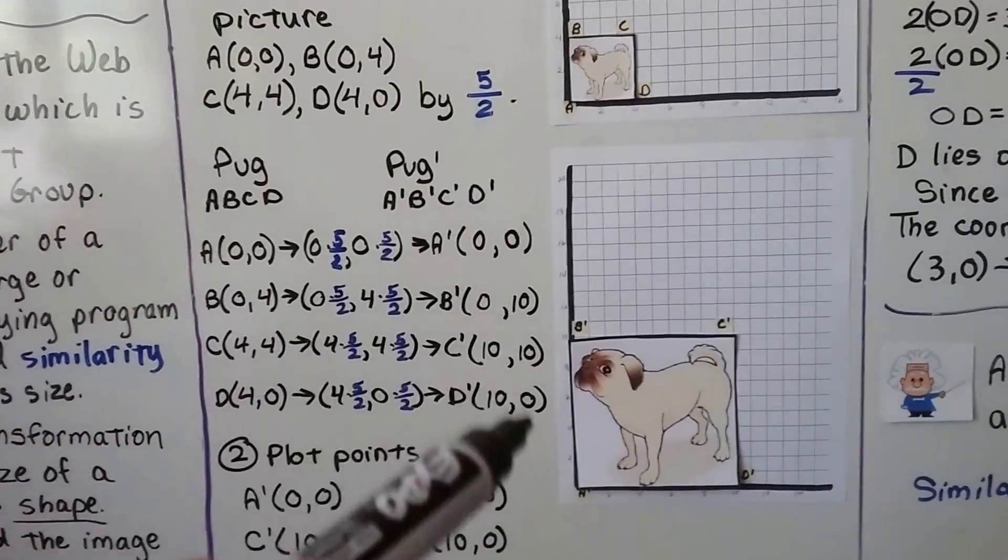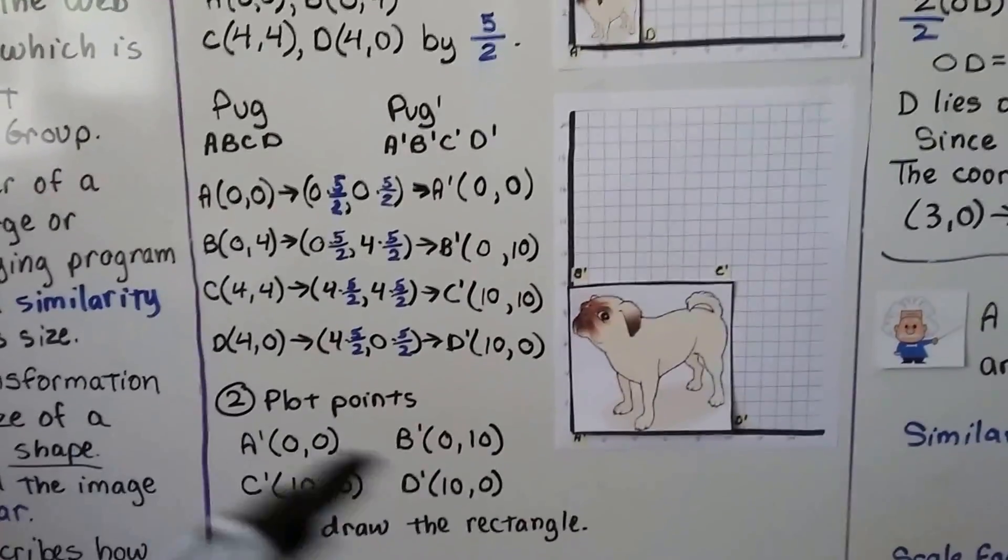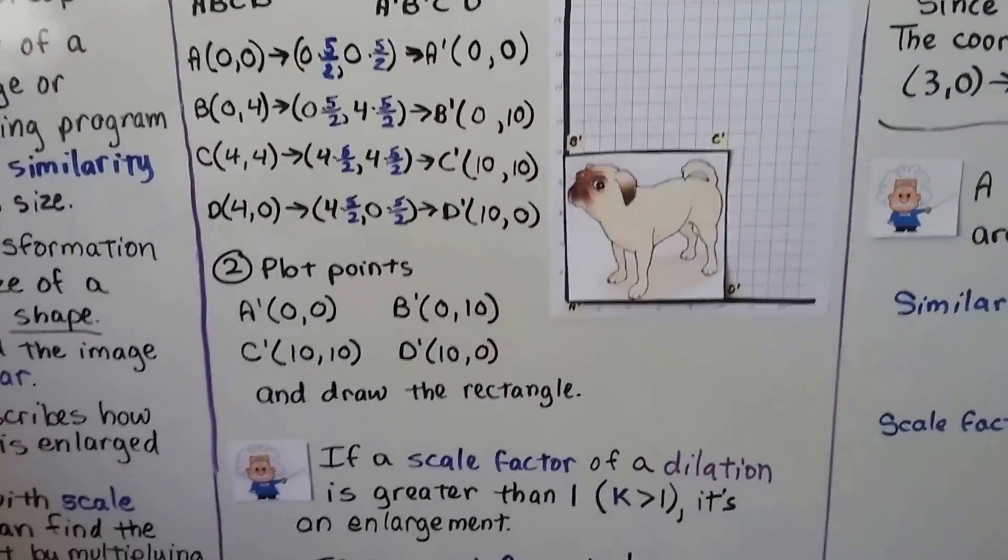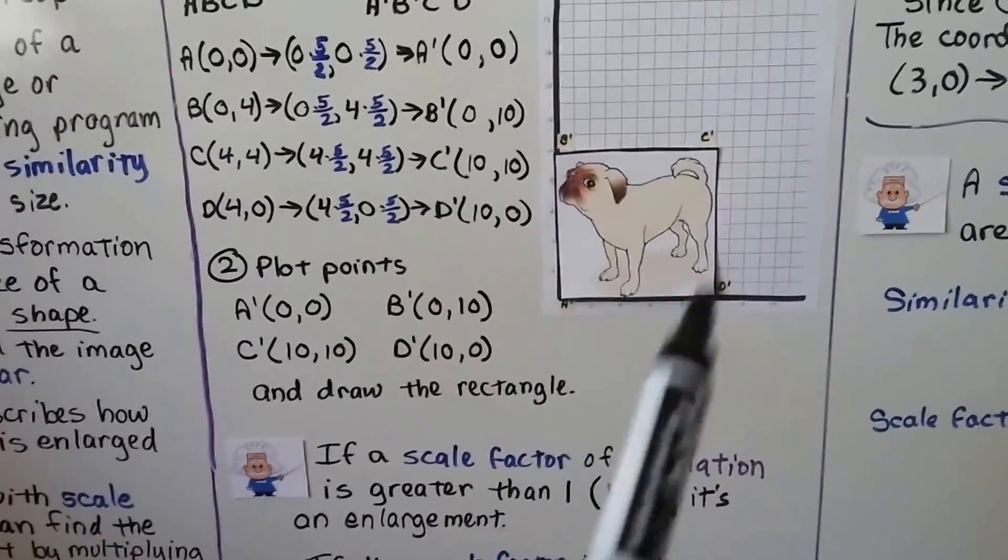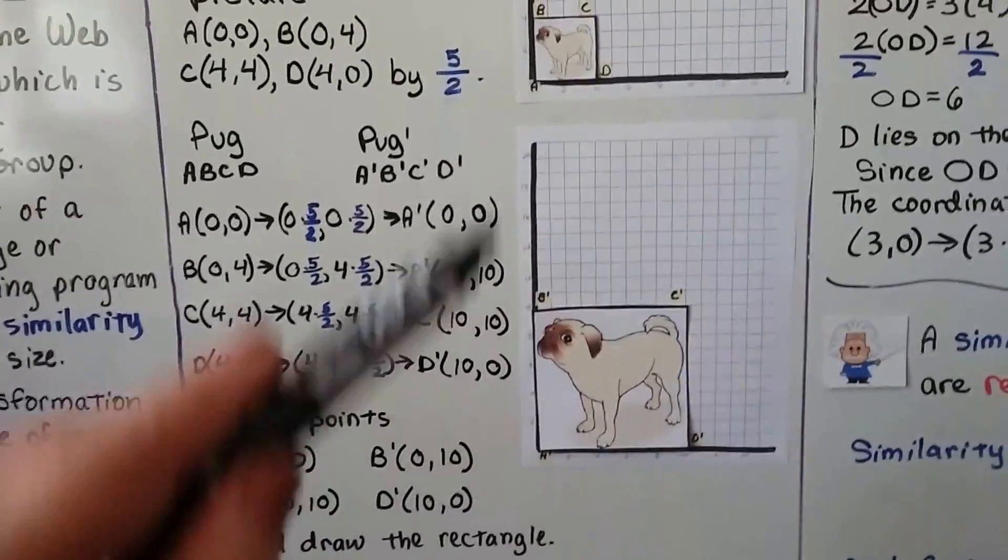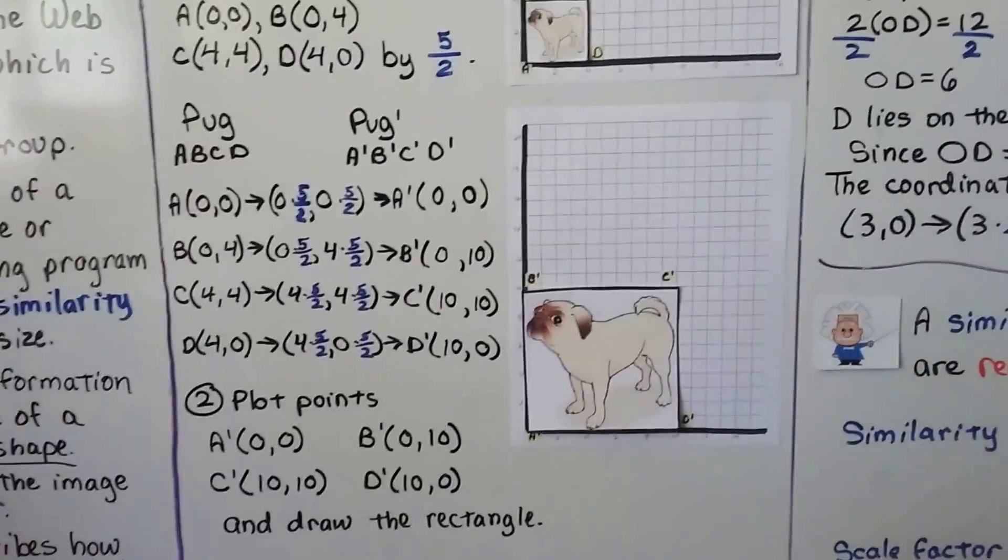Once we have our prime coordinates, we plot the points and draw the rectangle, and then we have a larger pug by five halves.